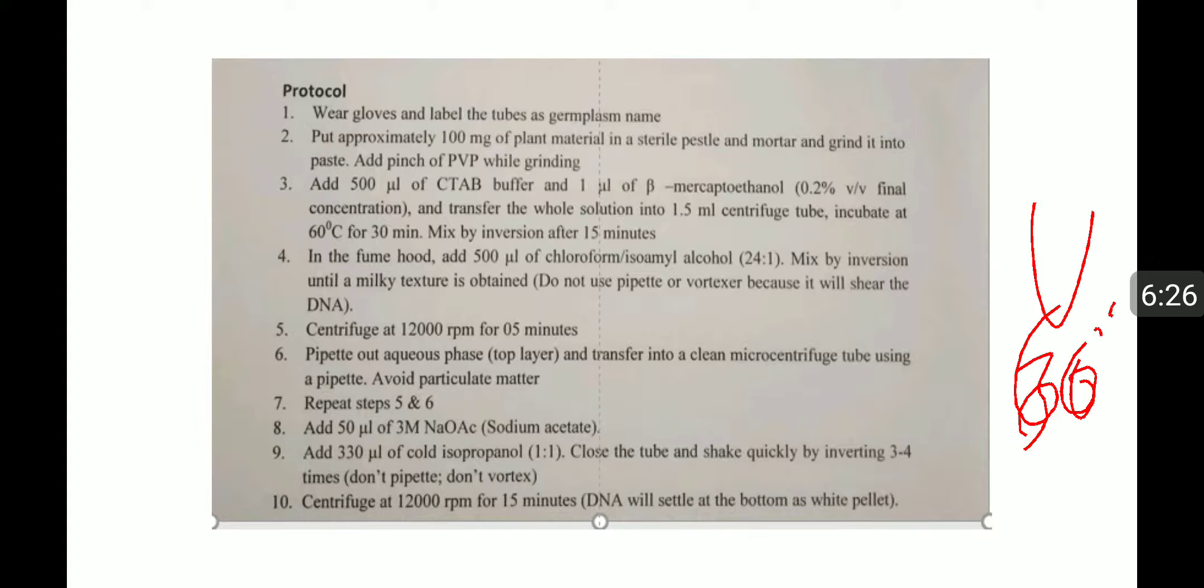Add 500 microliters of chloroform and isoamyl alcohol 24:1, mix by inversion until the milky texture is obtained. Do not vortex or shake because it will shear the DNA. Centrifuge at 12,000 RPM for 5 minutes.